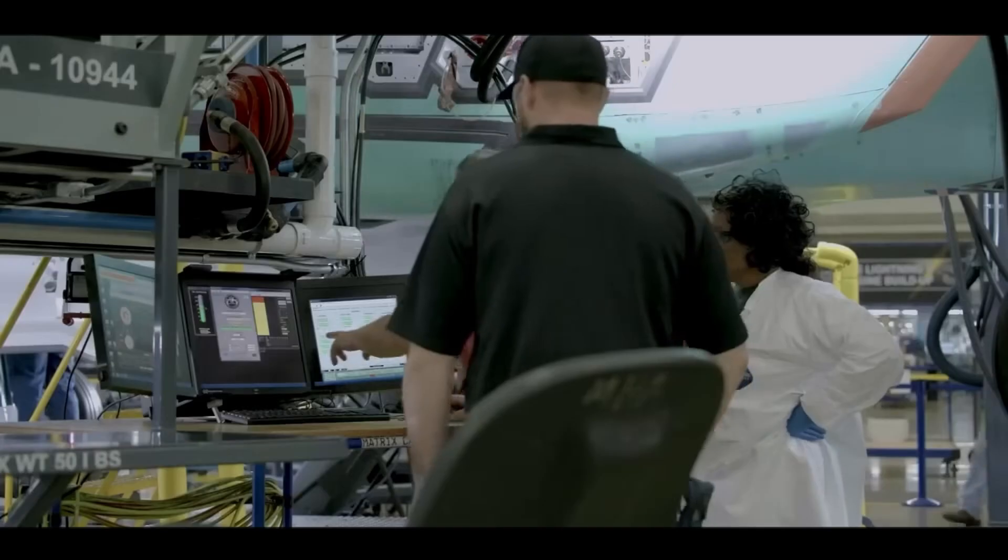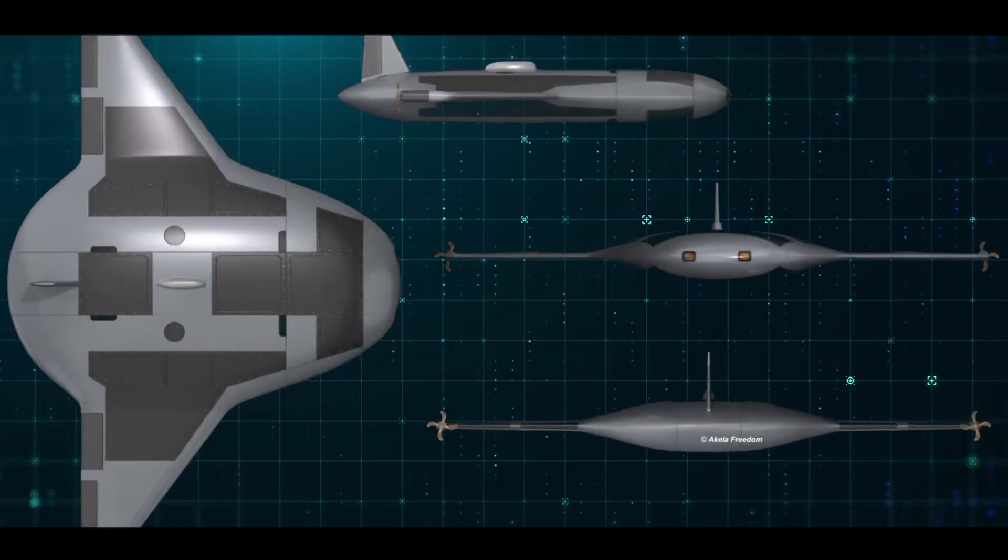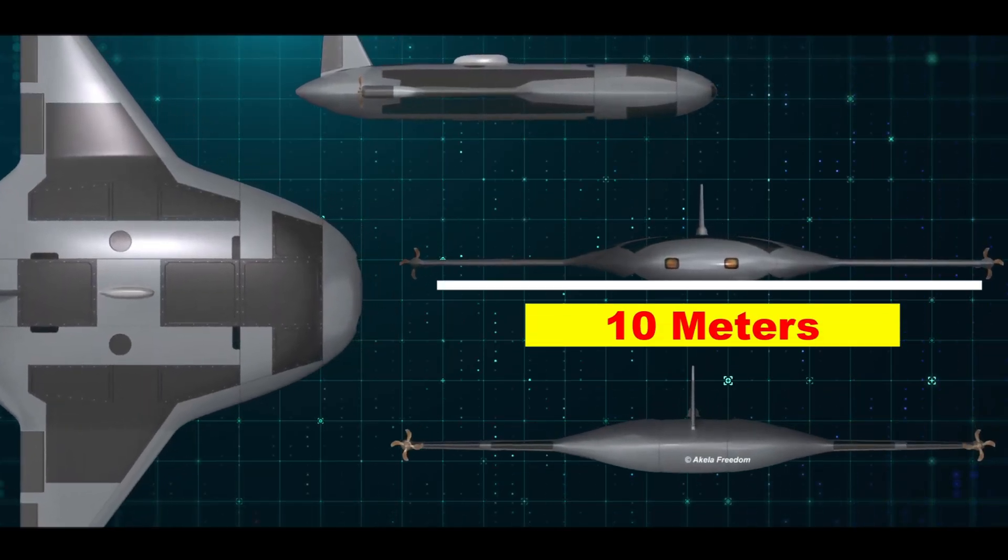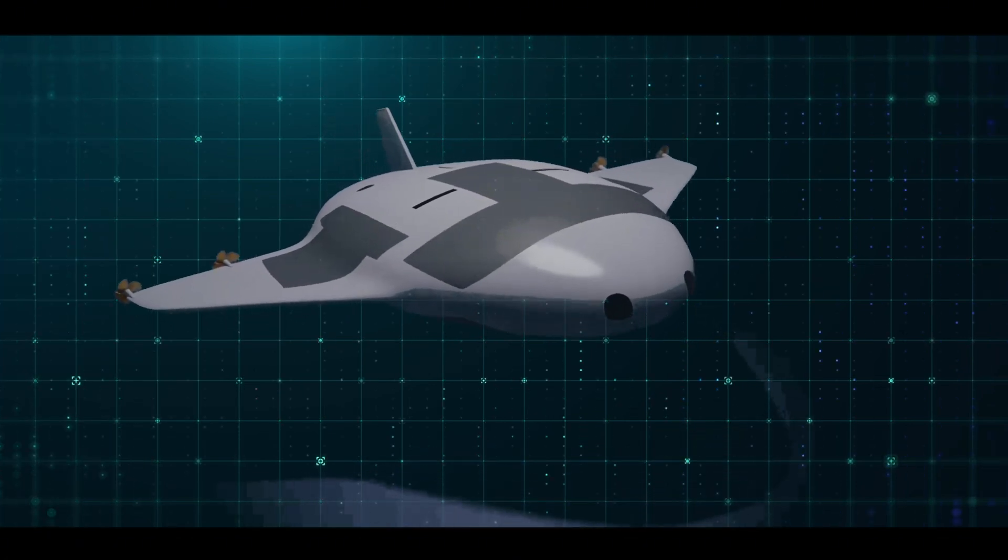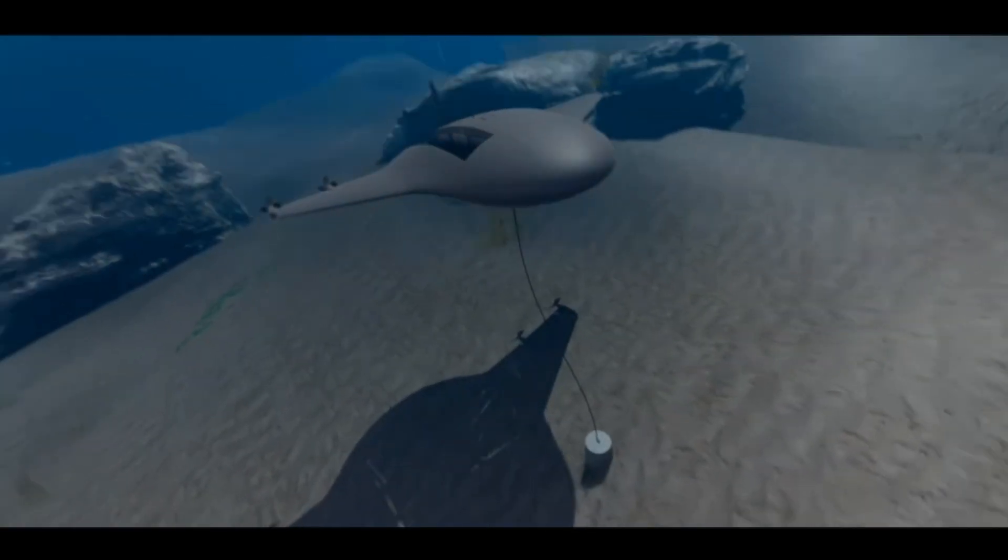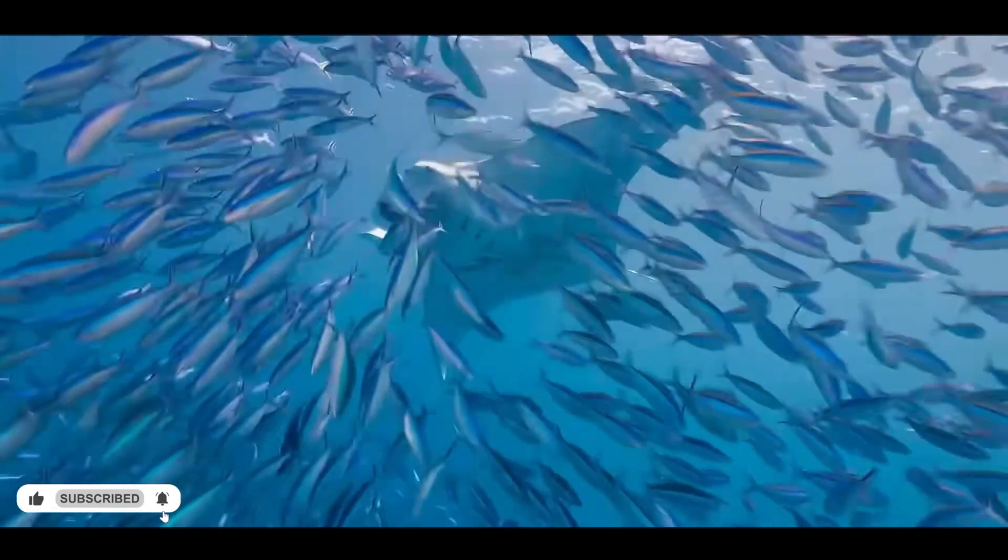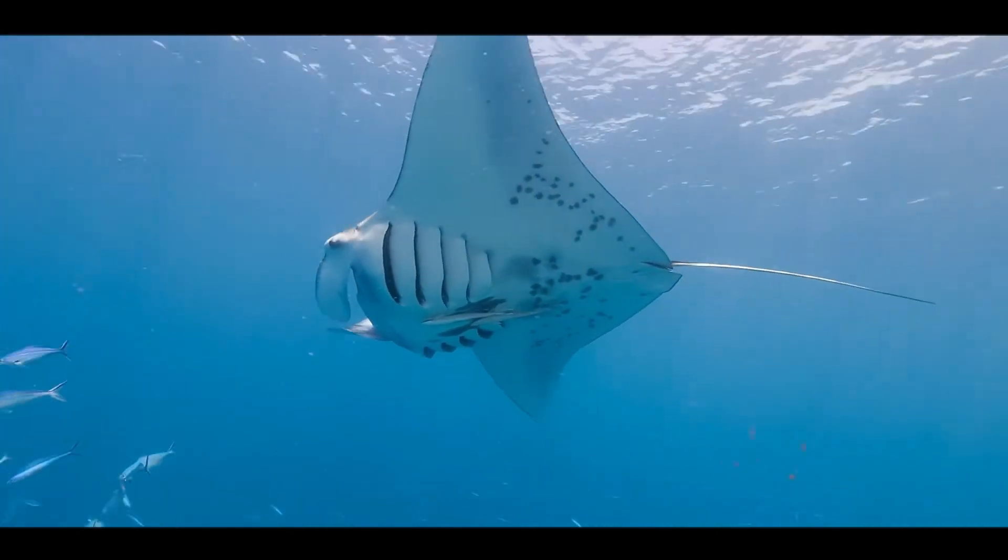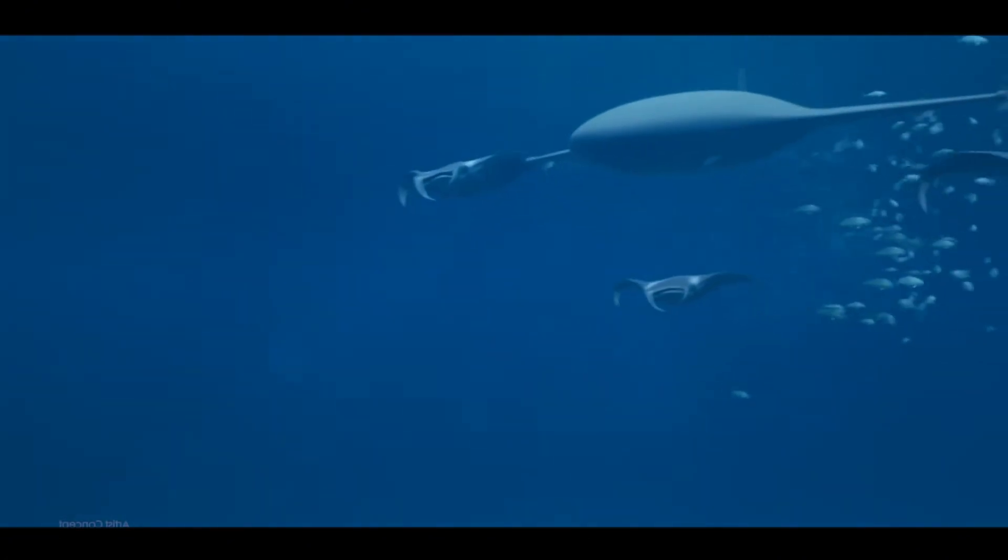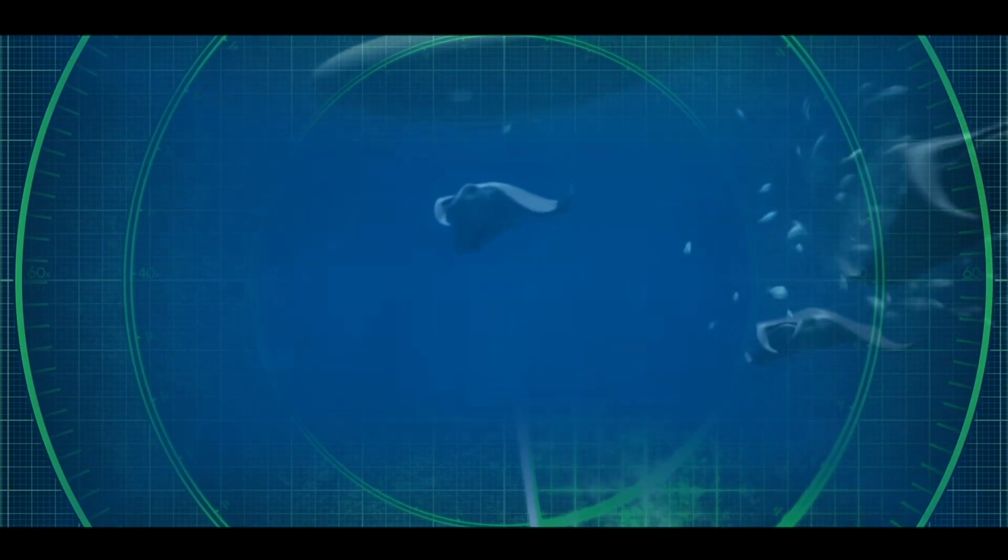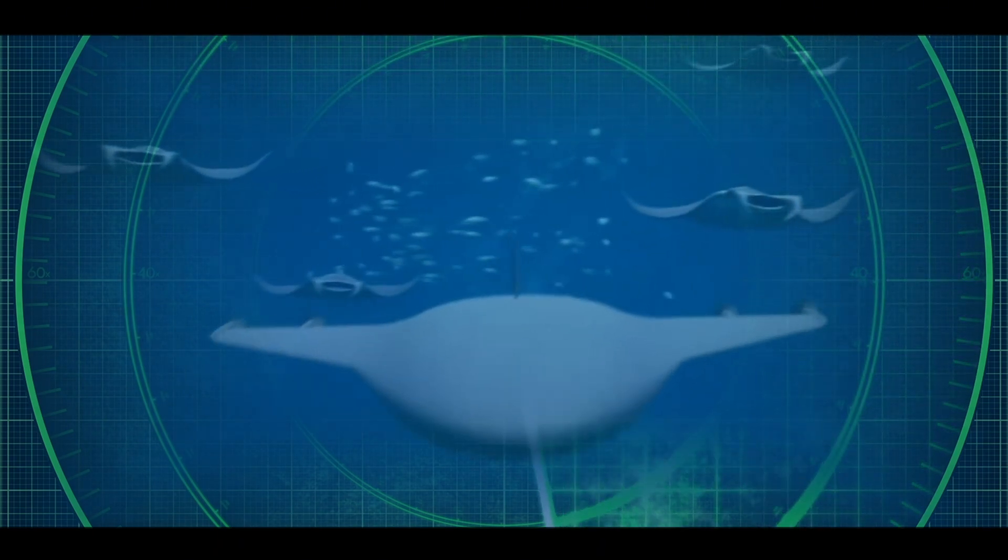Although many details of the manta ray's design remain classified, reports provide a glimpse into its impressive capabilities. With an estimated wingspan of approximately 10 meters, the drone is equipped with high-resolution cameras, sophisticated sensors, and cutting-edge sonar systems. These tools enable it to gather detailed intelligence and perform complex reconnaissance missions with precision. Enhancing its stealth capabilities, the manta ray is designed to glide through the water using minimal energy, mimicking the smooth and silent movements of a real manta ray. This biomimetic feature allows it to blend seamlessly into its environment, making it difficult to detect and ideal for covert operations.